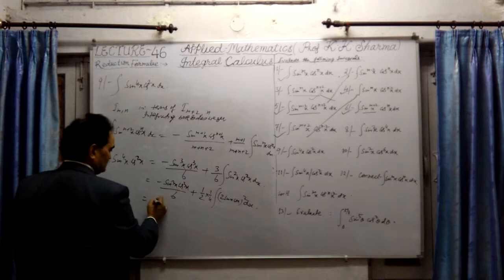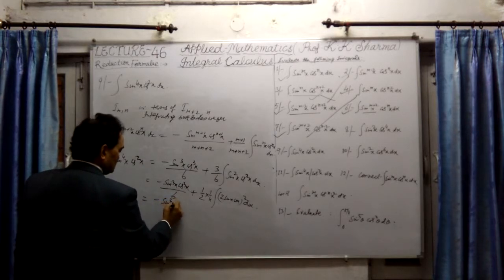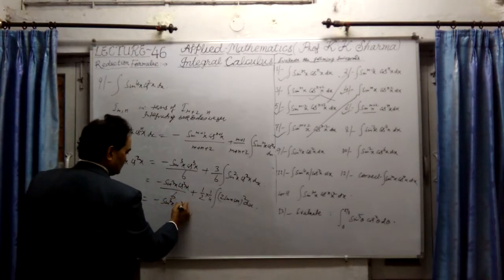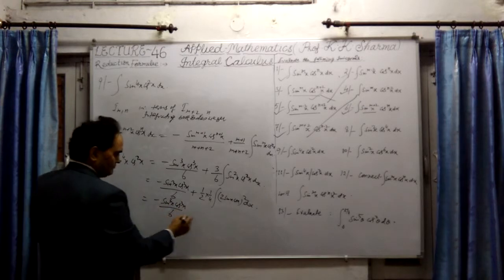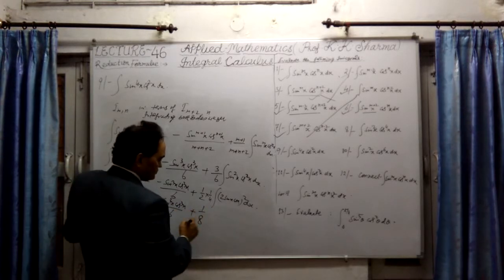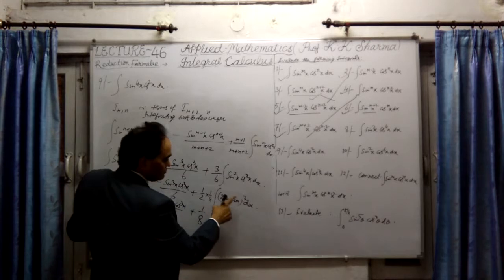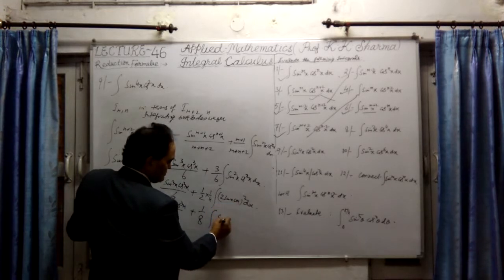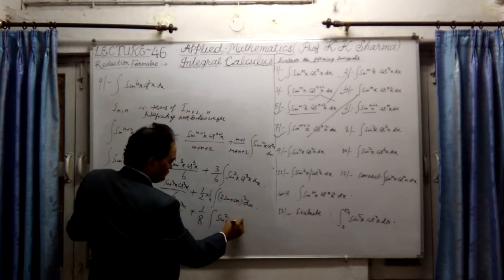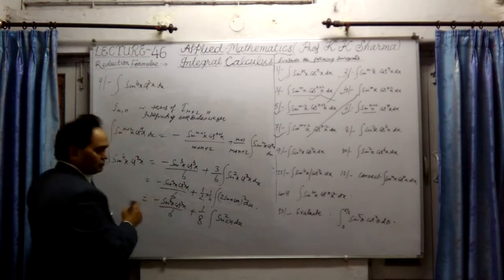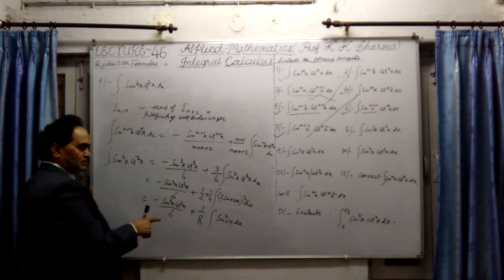It can be further written as sine cube x, cos cube x upon 6, plus it would be 1.8. Now it is nothing but sine square 2x. Again it is to be multiplied by 2 and divided by 2.